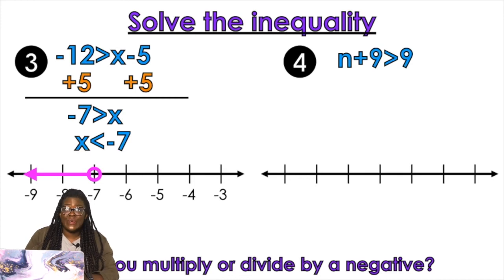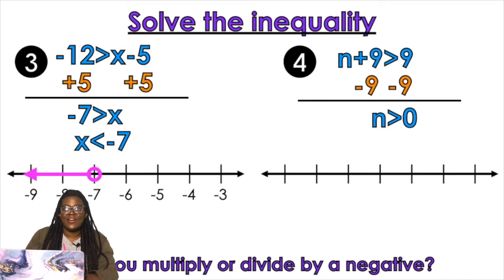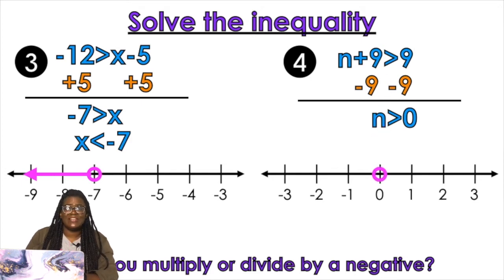N plus nine is greater than nine. What you going to do? Did you say subtract nine? Scholar. N is greater than zero because nine minus nine is zero. Find zero on the number line — it's okay for your answer to be zero. Open circle, and left or right? Right.